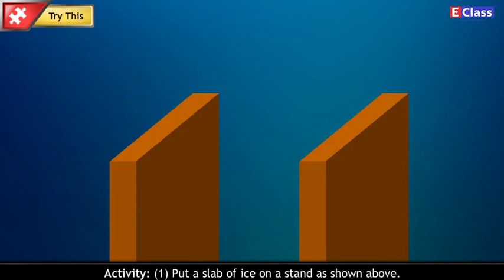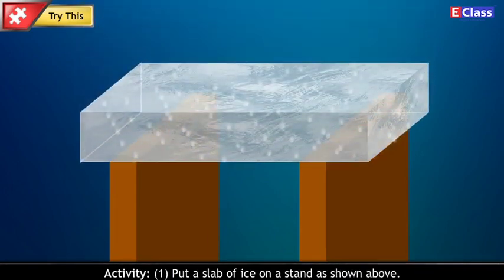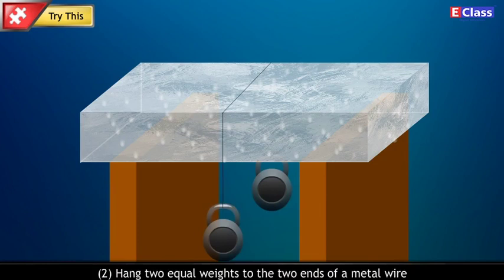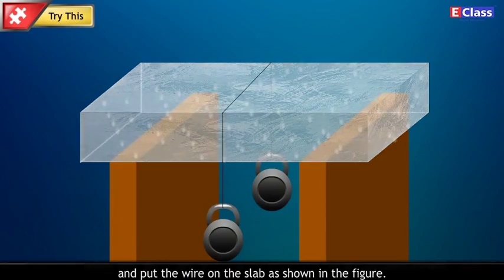Activity: Put a slab of ice on a stand as shown above. Hang two equal weights to the two ends of a metal wire and put the wire on the slab as shown in the figure.